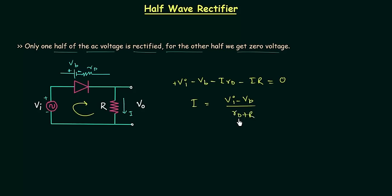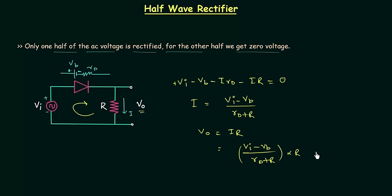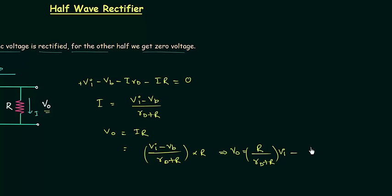This is the value of current I and we can easily calculate the output voltage VO, which is equal to I·R. So we have (VI minus VB) divided by (Rd plus R), multiplied by R. We can also write this as VO = R/(Rd + R) · VI minus R/(Rd + R) · VB. This is what we have in case of the piecewise linear model.